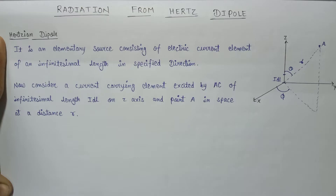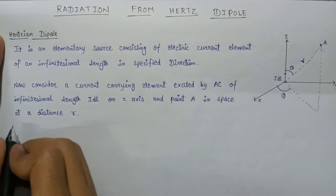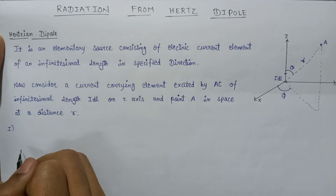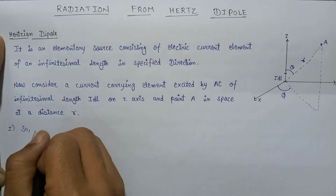This lecture is basically divided into four parts. First, we will discuss the magnetic vector potential. After that, we will find the components of the magnetic field intensity. Then we will find the components of the electric field intensity. And in the final step, we will find the fields generated by the Hertzian dipole.